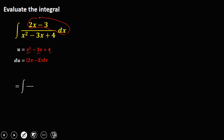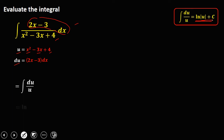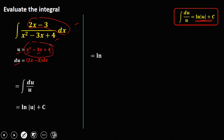So we have the integral of 2x minus 3 dx, which equals du, and x squared minus 3x plus 4 equals u. Using the formula, the integral of du over u equals ln of the absolute value of u plus c. Substituting back the value of u, that's x squared minus 3x plus 4, the answer is ln of the absolute value of x squared minus 3x plus 4, plus c.